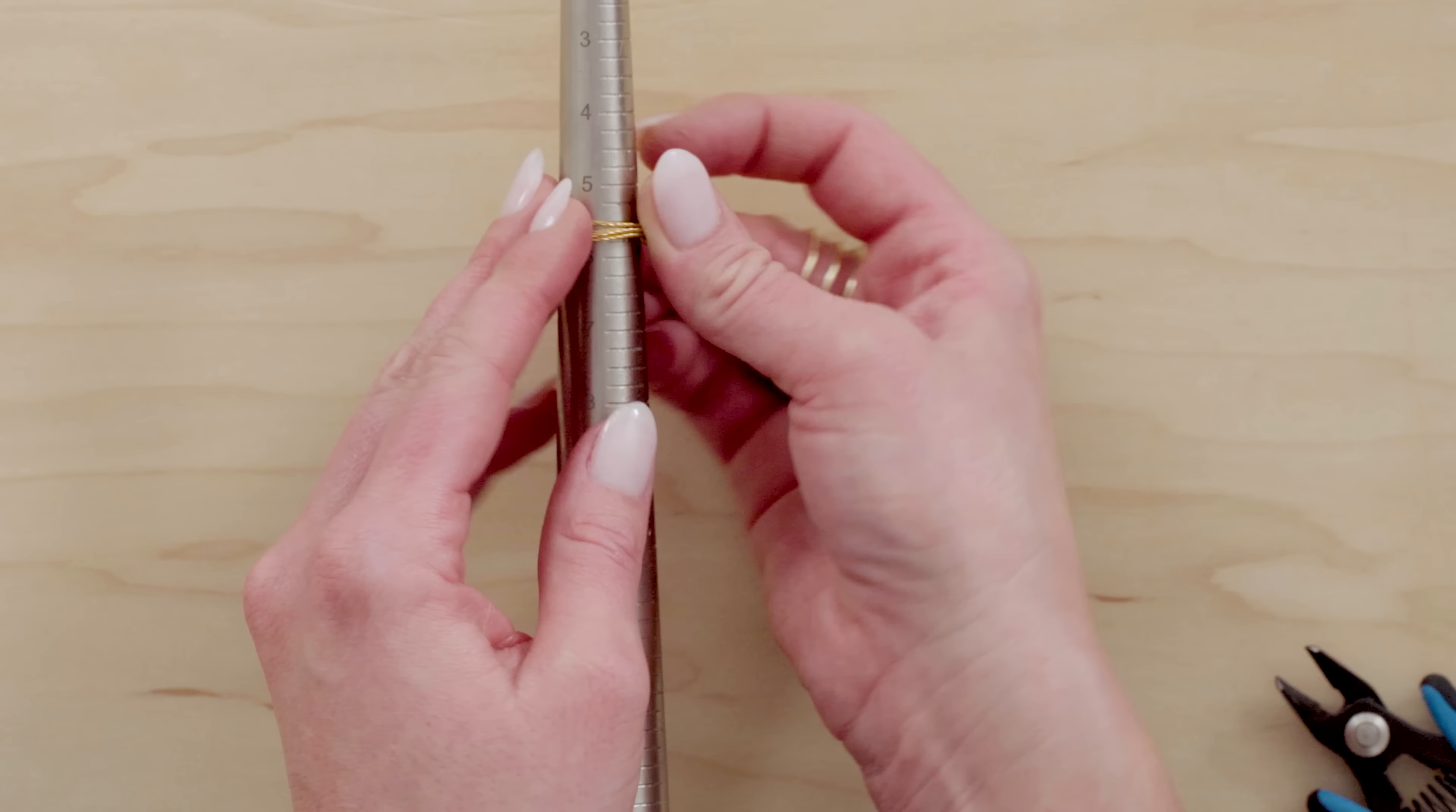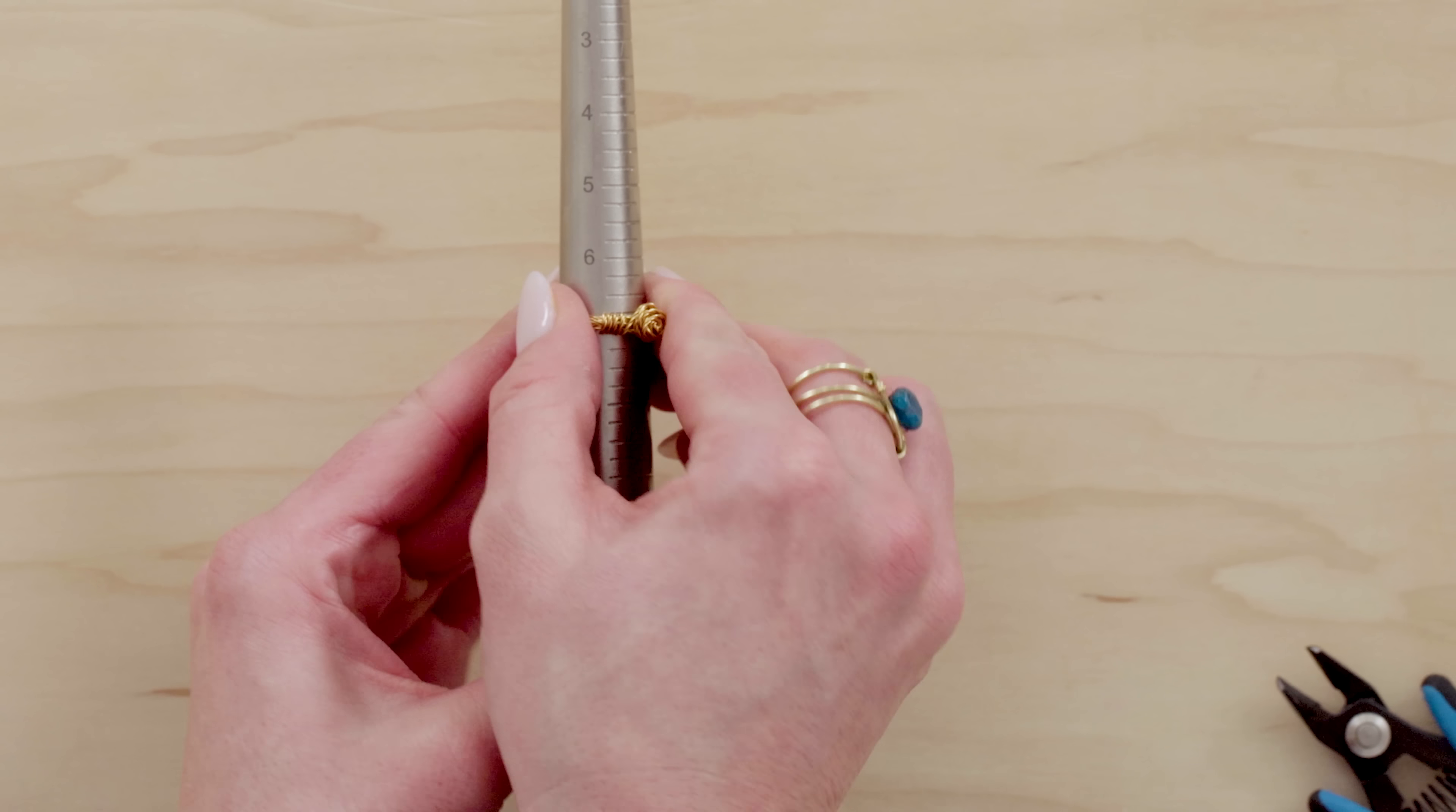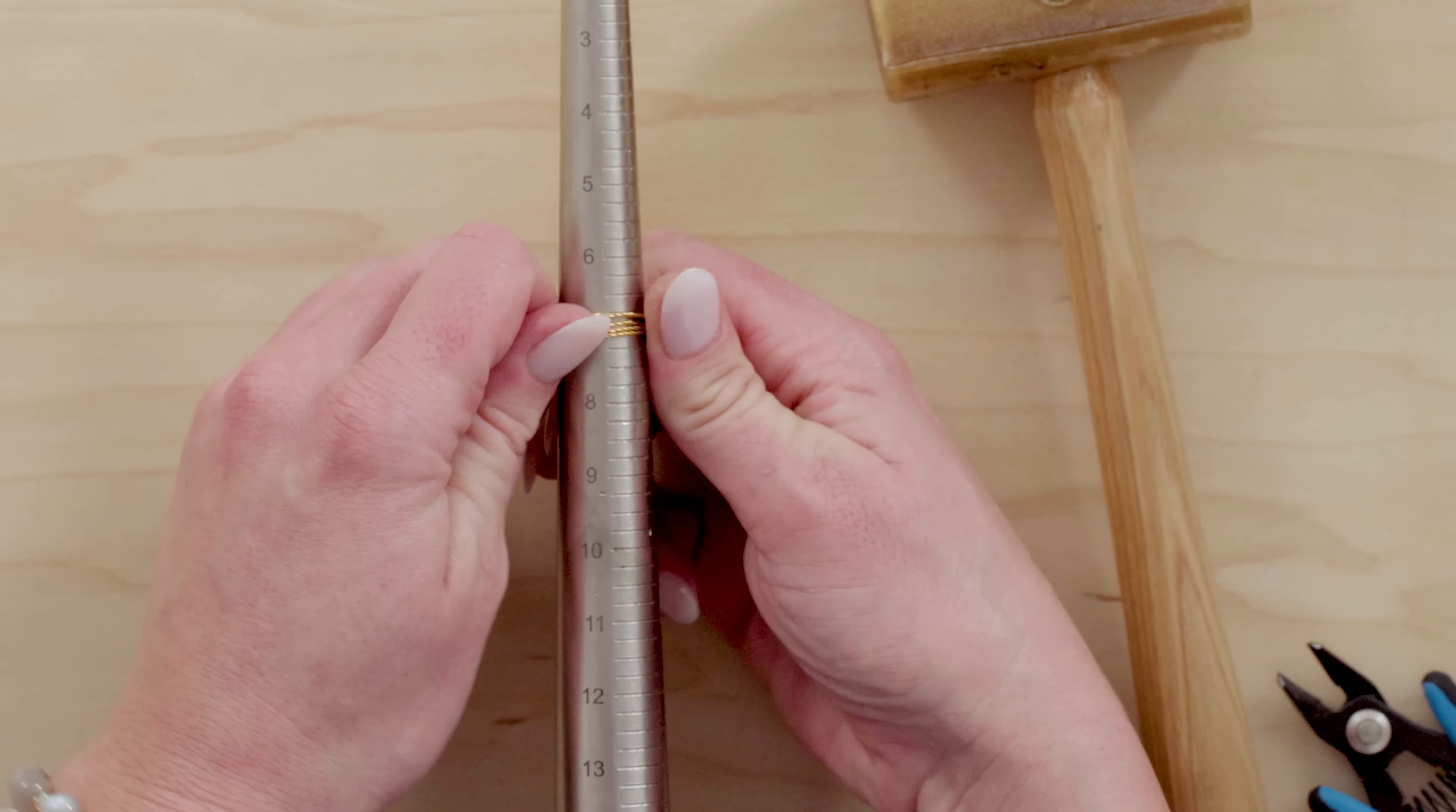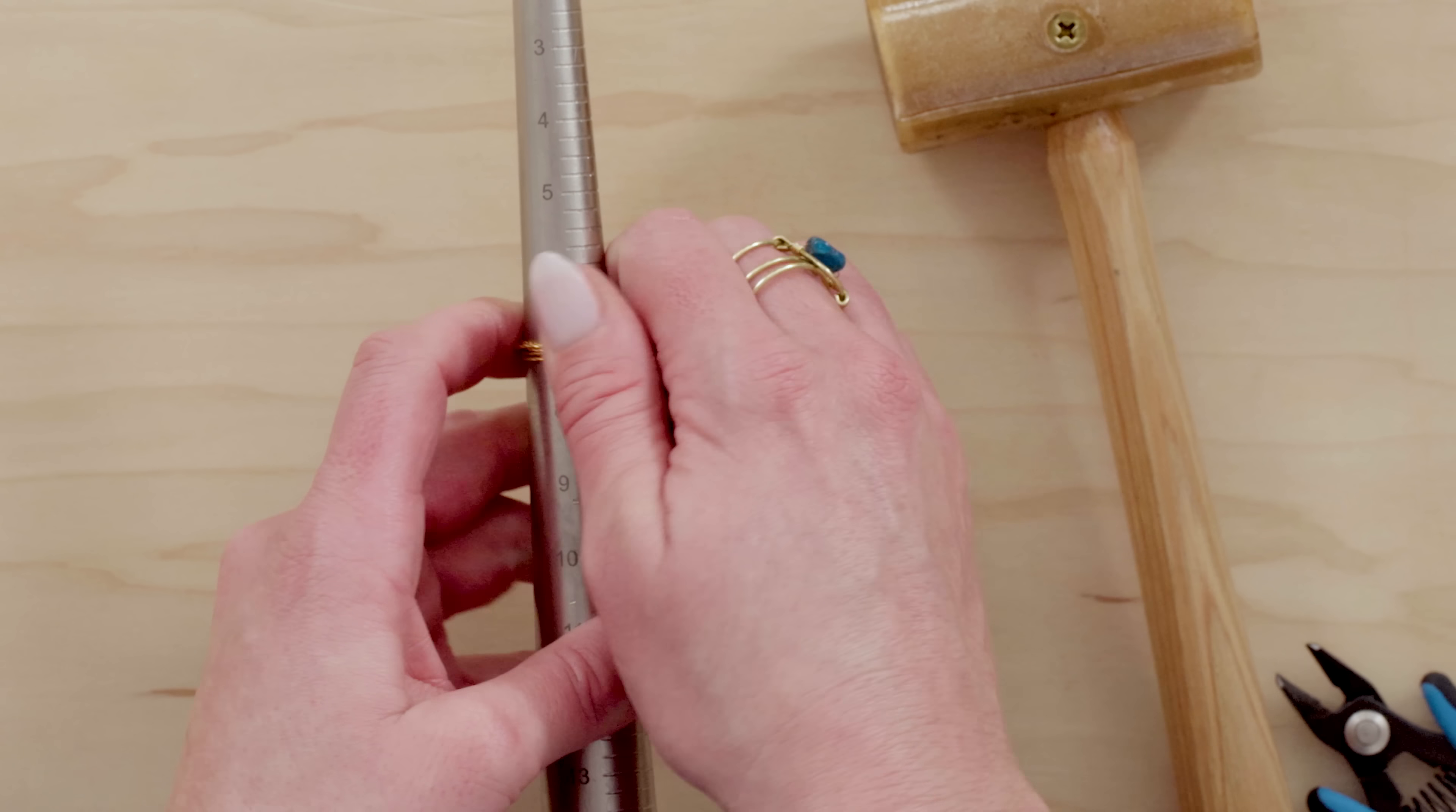Okay so you can see that my ring is kind of misshapen a little bit. And I'm going to put it back on my mandrel. And slowly just try to open it back up a little bit. And this is the point where if you have your mallet you can gently tap it a little bit if you need to. Get it to open up.